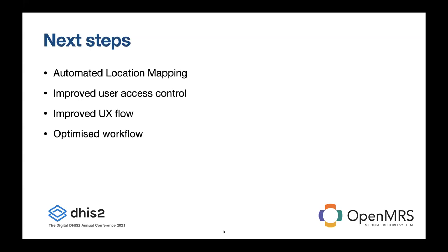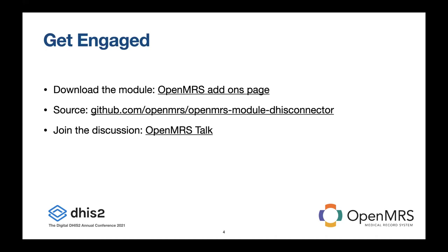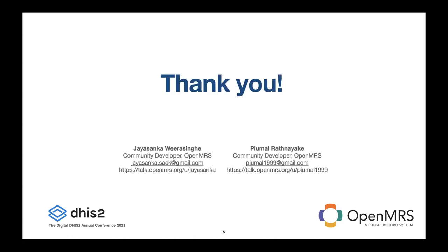We are also improving the UI/UX to provide a better user experience, making it simpler and easier. We're optimizing the workflow of the DHIS2 Connector Module to make processes faster. This module is available publicly — you can download it from the OpenMRS identification page. As with everything at OpenMRS, this is open source, so you can contribute to make it even better. Join OpenMRS Talk today and let's continue the discussion there. If you have any questions, feel free to contact us in OpenMRS Talk or the DHIS2 community.